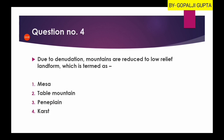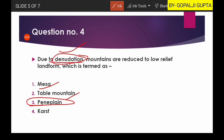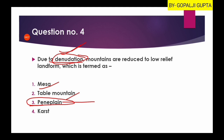Question number four: due to denudation, mountains are reduced to low relief landforms. What are these low relief landforms termed as? Denudation is the combination of weathering and erosion, which reduces highland areas. Although mesas and table mountains are erosional products, the ultimate aim of denudation is to convert highlands into a peneplain. So the third option is the right answer.